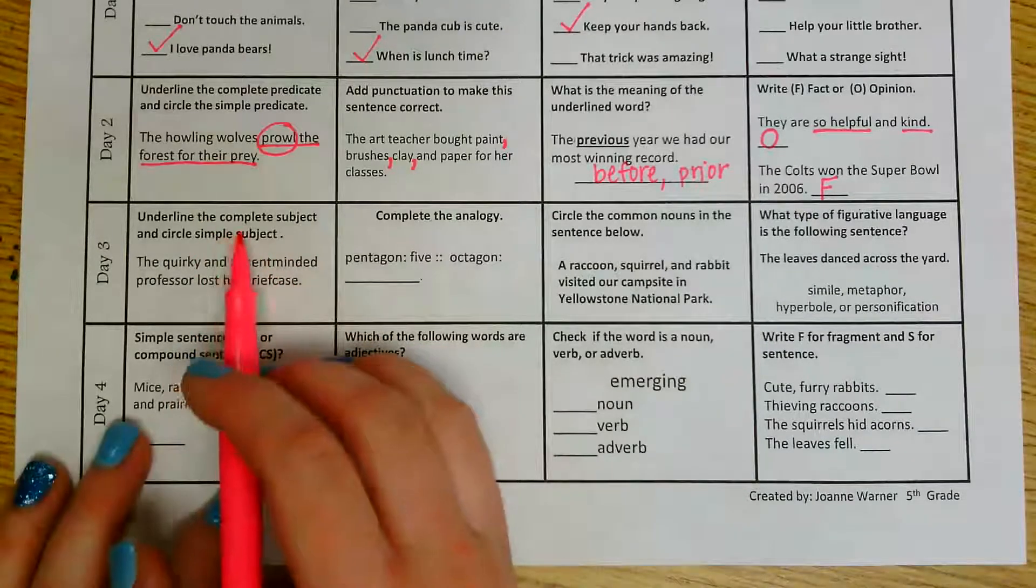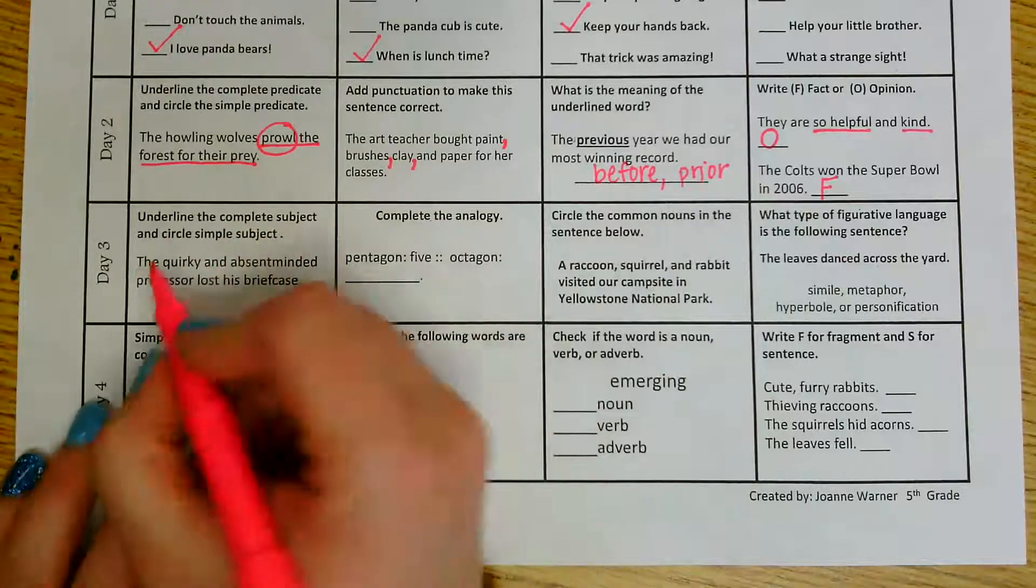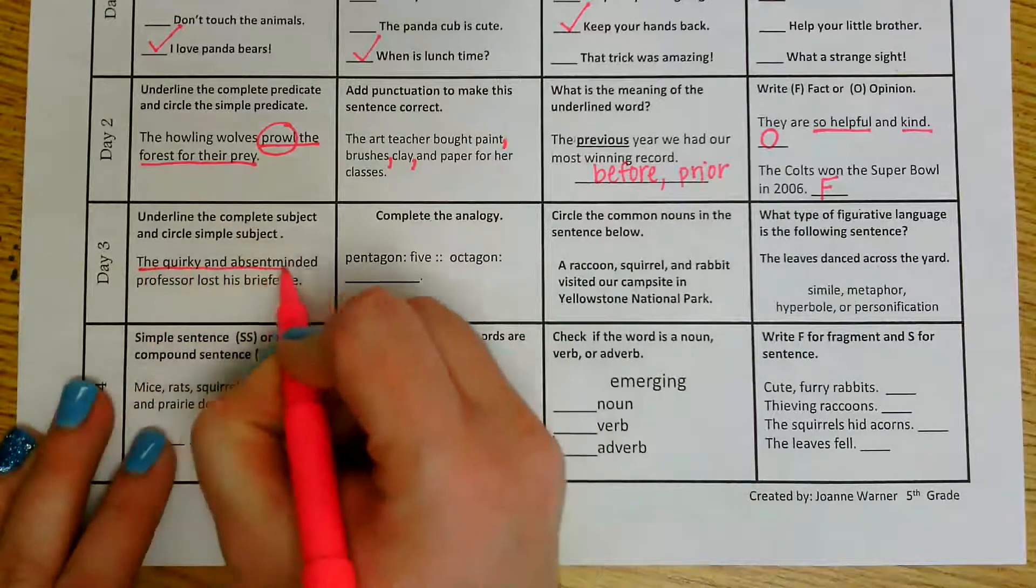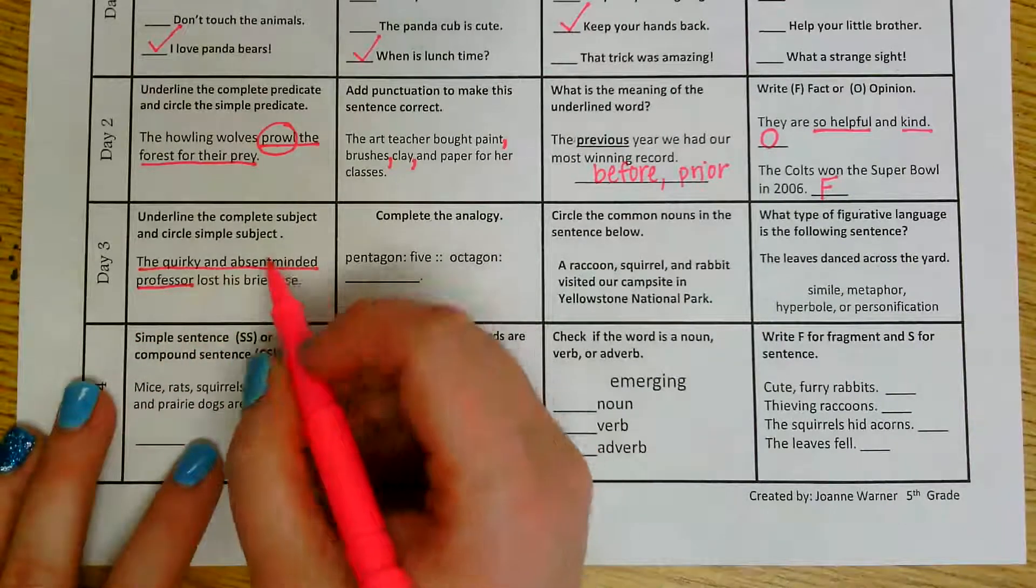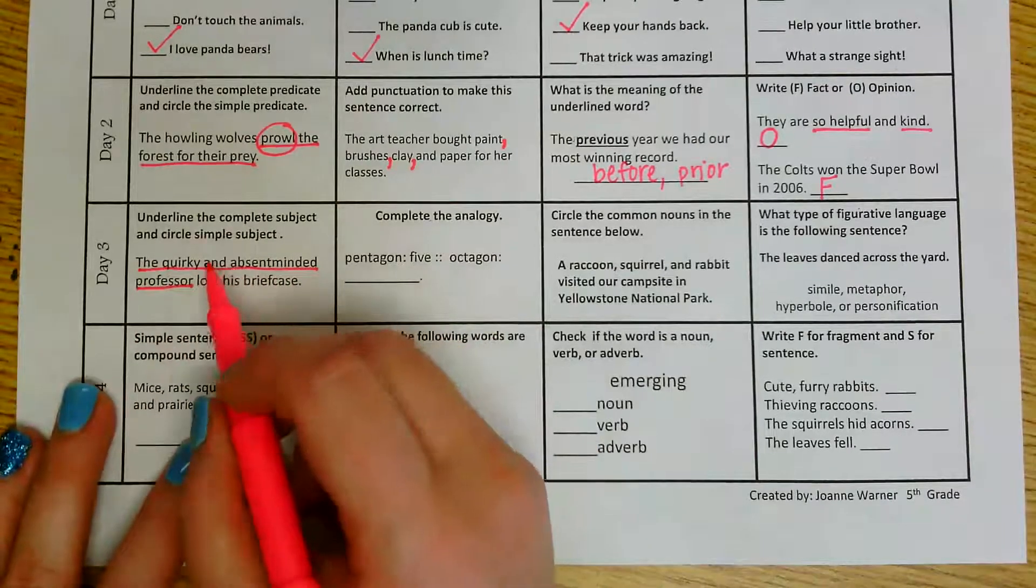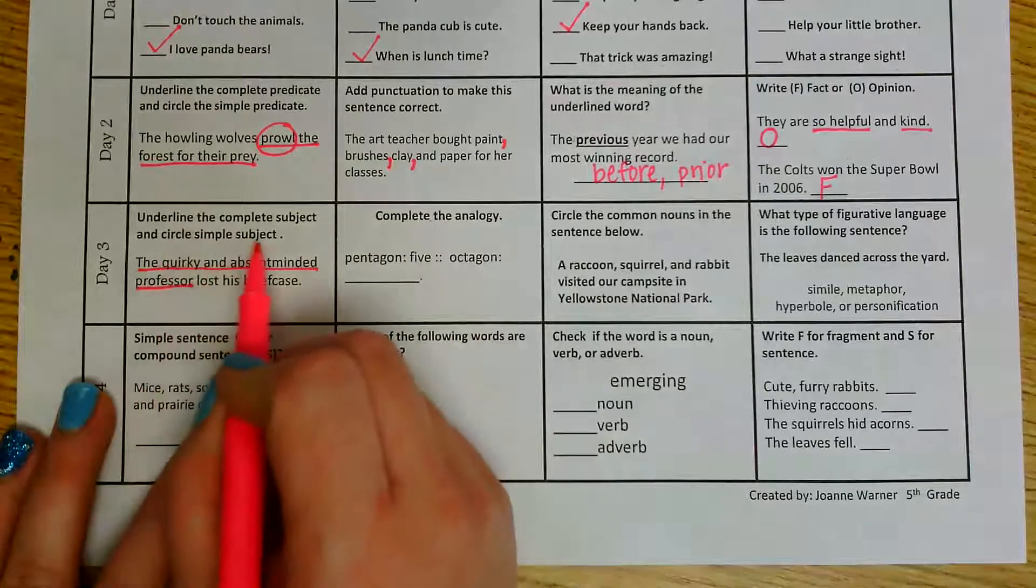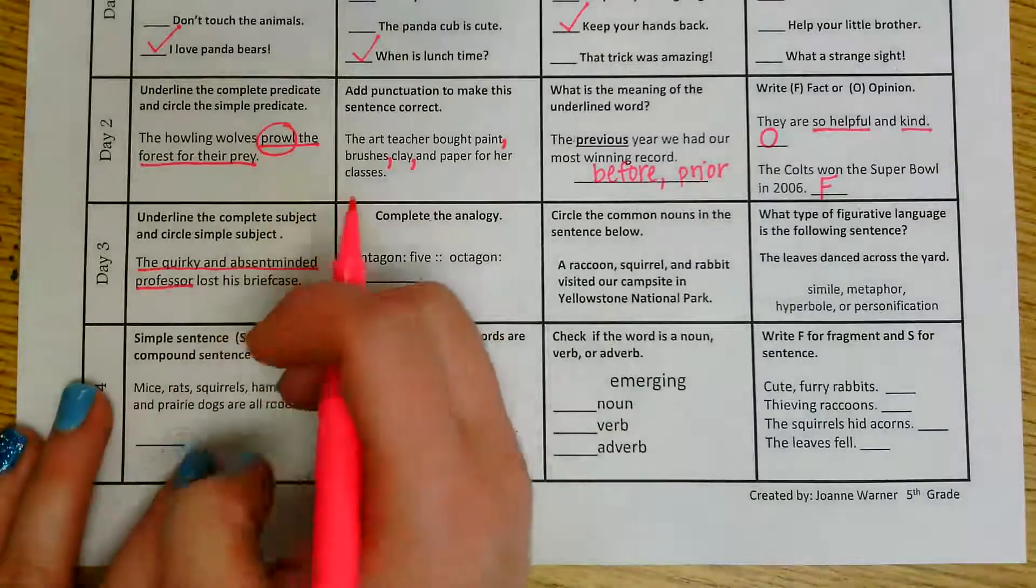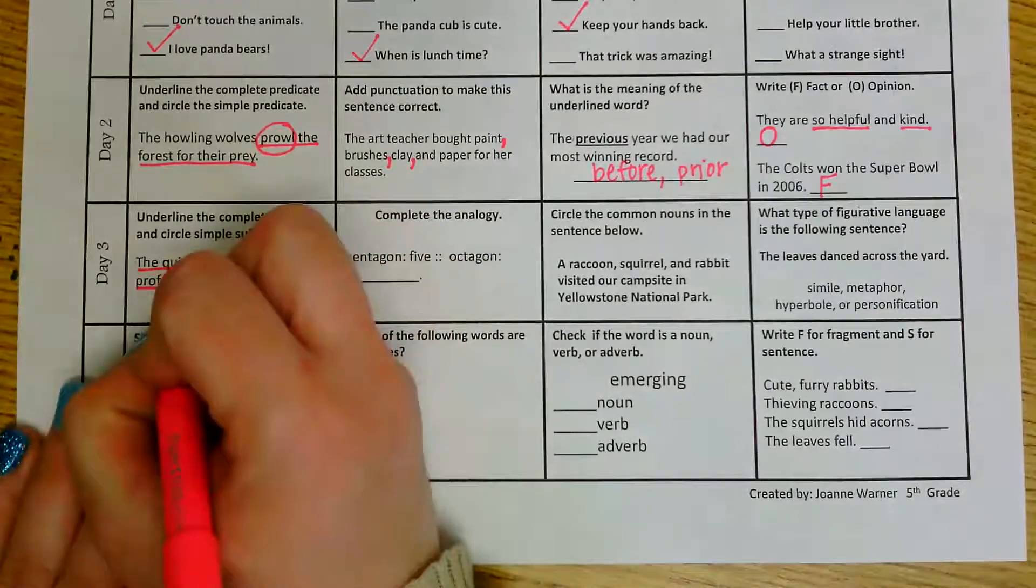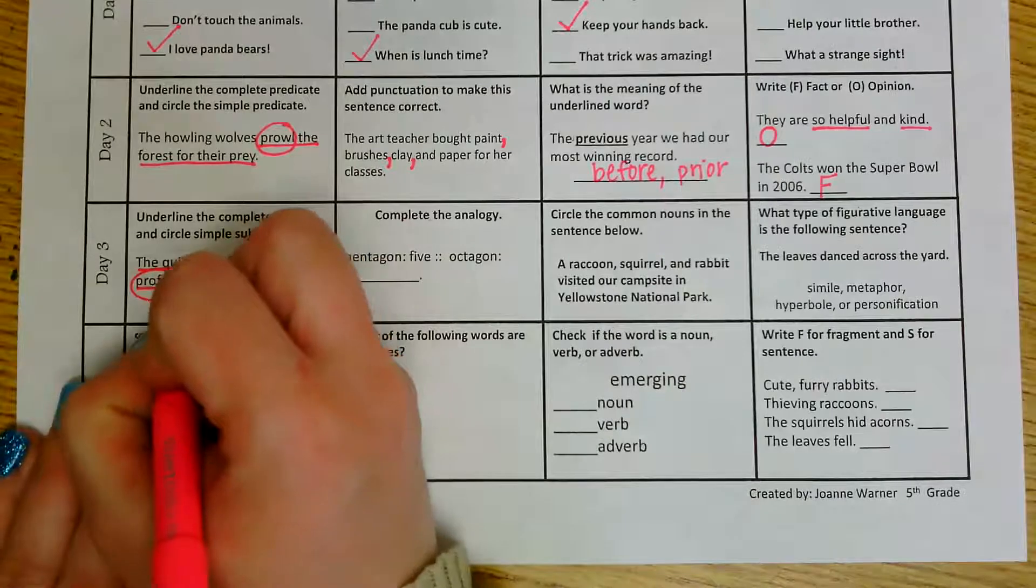So if I'm looking for my complete subject, that would be all of this information. The quirky and absent-minded professor. That is who the sentence is talking about. Now I need to circle the simple subject. So I just want that person or thing. I don't want all of the adjectives to describe them. So the word that we are going to circle would be professor.